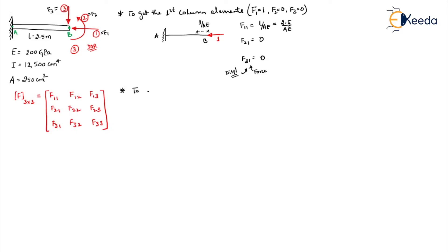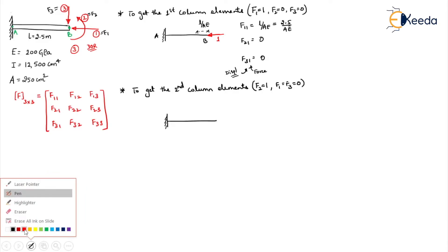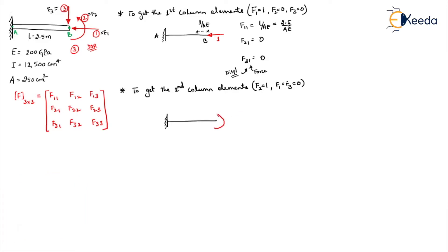Now let us move ahead to get the second column element. To get the second column element, we have to apply unit force in the direction of the second coordinate, while all other coordinate forces should be equal to zero. The second coordinate is an anticlockwise moment. So we have to apply a moment equal to 1 and see what displacements occur in the three coordinates. When you apply a unit moment, the beam lifts up.